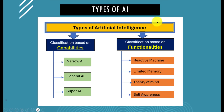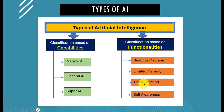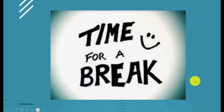There are two main broad classifications of AI types. The first classifies AI based on capabilities, and the second based on functionalities. For capabilities, you have three: Narrow AI, General AI, and Super AI. For functionalities, you have: Reactive Machine, Limited Memory, Theory of Mind, and Self-Awareness.